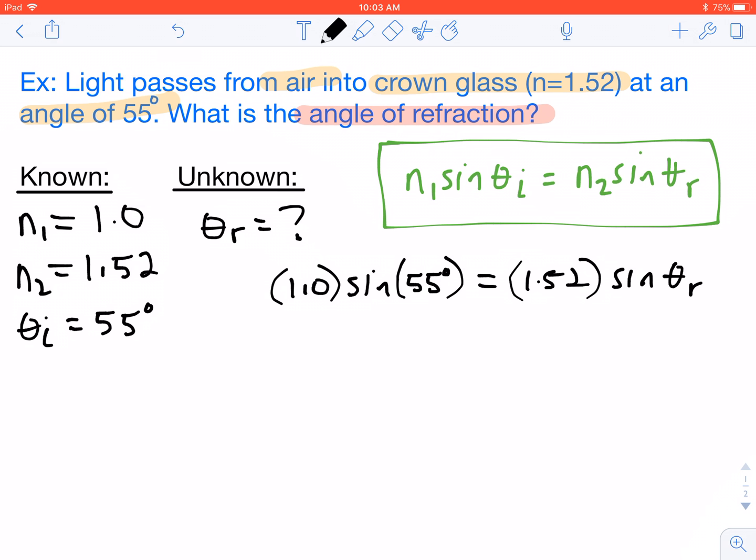So our goal is to get theta r all by itself. So the first thing that we have to do here is divide by 1.52 on both sides. And when we do this calculation, you can plug all of this into your calculator all at once. So sine of 55 degrees times 1 divided by 1.52 gives us an answer of 0.539.